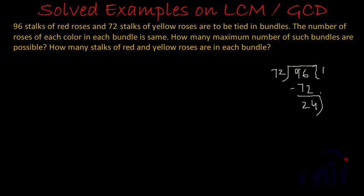And then this 24 will become the divisor and 72 will be the dividend, and I think it divides 72 three times. 4, 3's are 12, 1 carried forward, 3, 2's are 6 plus 1 is 7. And if we subtract now we get remainder as 0. That means HCF of 72 and 96 is equal to 24.